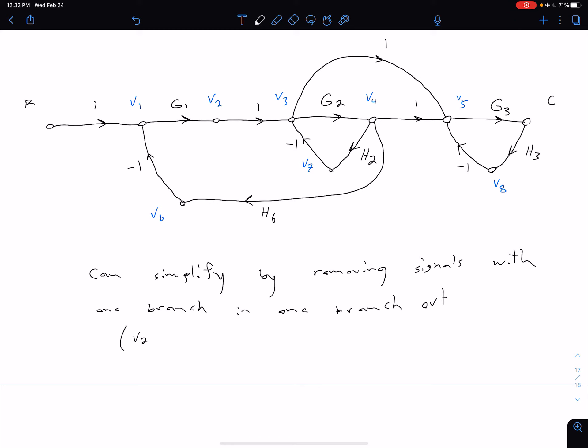So for instance, if we want, we can come up here and we can say this V2 only has one thing in, one thing out. So we can just go ahead and connect that.